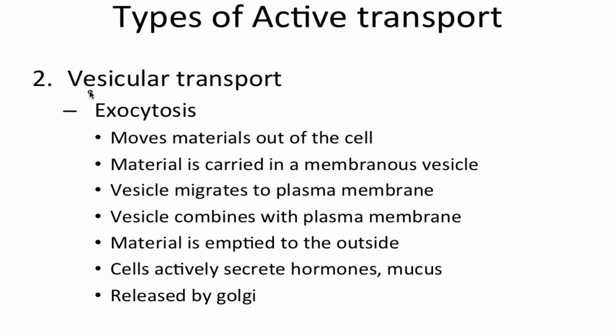The next type of active transport is vesicular transport. We have exocytosis. Exo hopefully reminds you of exit. Exocytosis moves materials out of the cell. Material is then carried in a membranous vesicle. Vesicles migrate to the plasma membrane. The vesicle combines with the plasma membrane and materials emptied outside of the cell. Really the most important thing to remember about exocytosis is materials are exiting the cell.